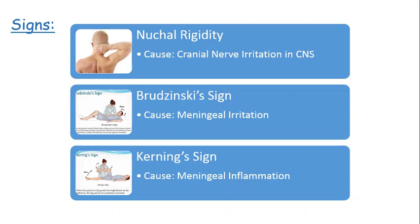The classical signs are nuchal rigidity, Brudzinski sign, and Kernig sign. Nuchal rigidity is due to cranial nerve irritation in the CNS. Brudzinski sign is due to meningeal irritation — when you flex the patient's neck, they feel pain and reflexively flex their legs at the knee joint.